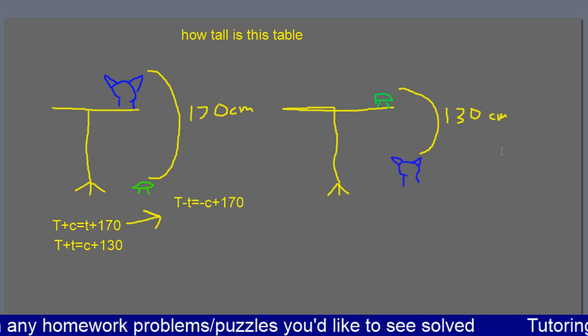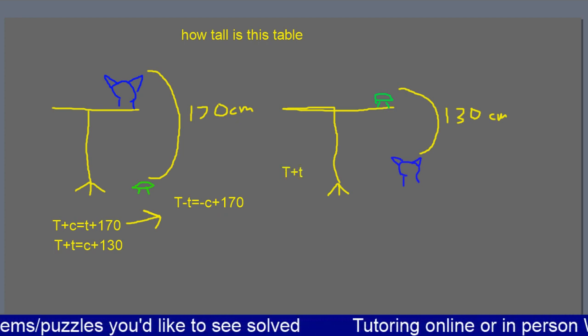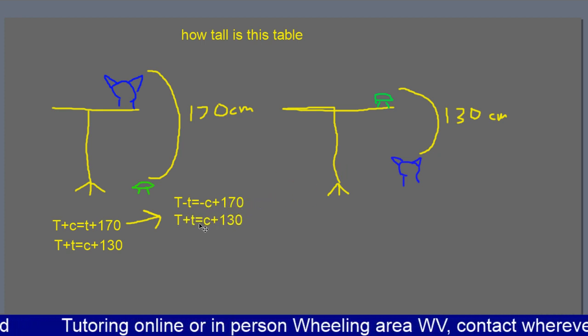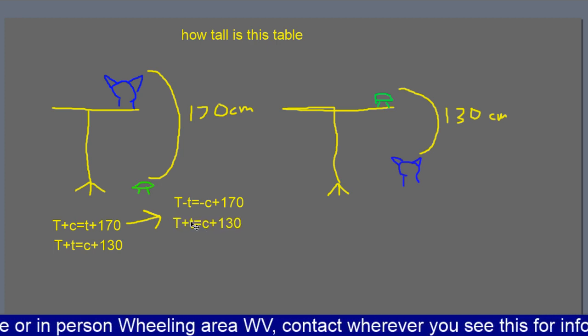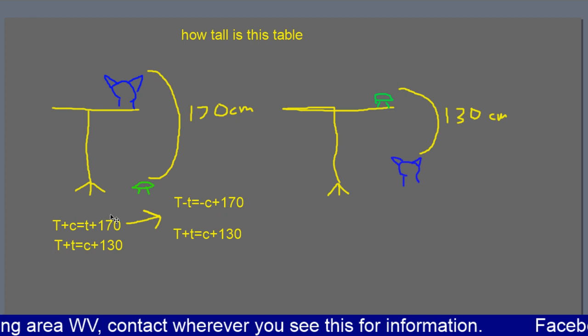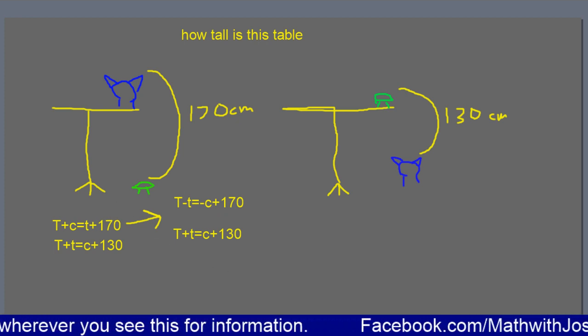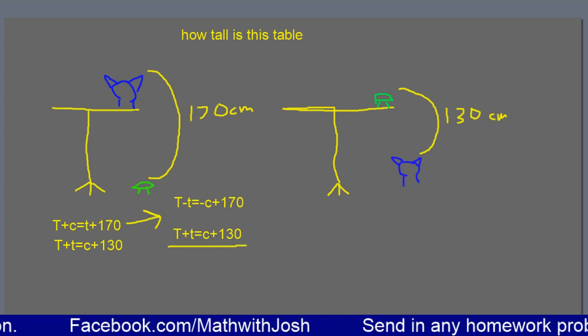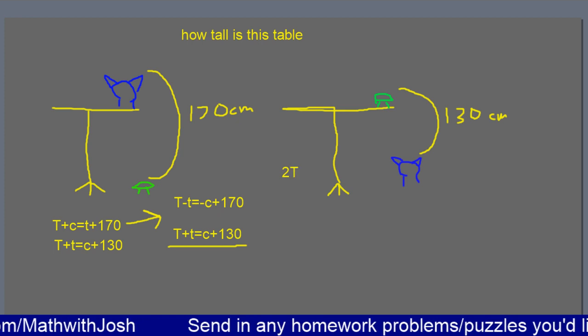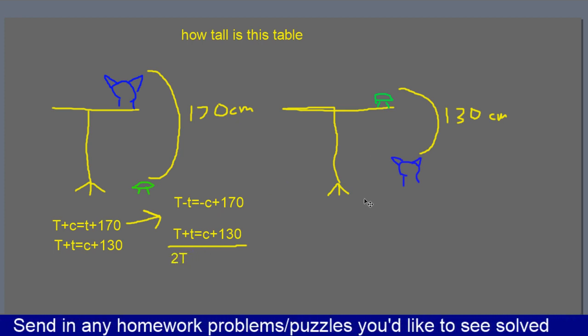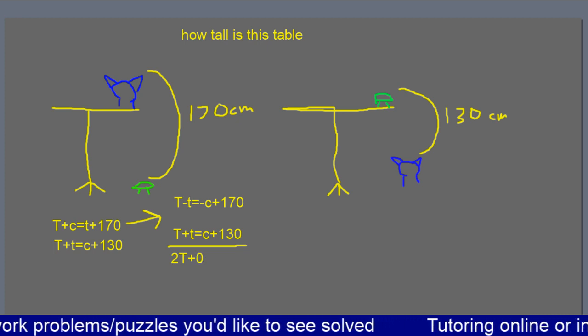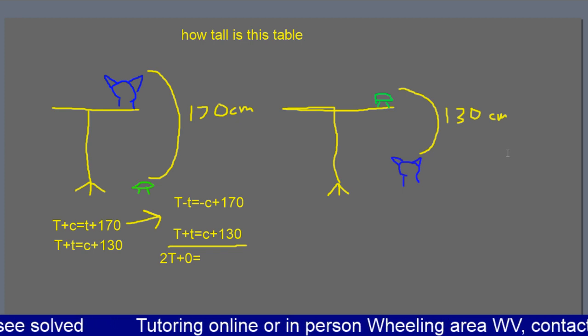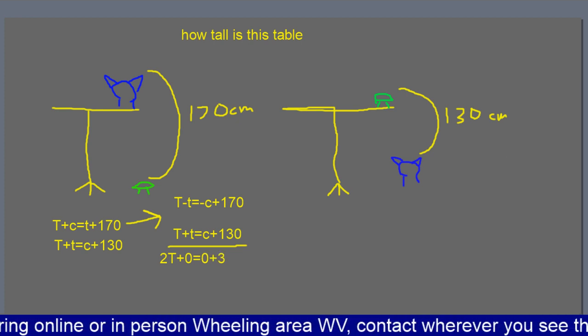So we're just going to copy the second equation over. Remember that capital T plus lowercase t equals C plus 130. The thing we're allowed to do is we move some things over to make the first equation line up in a way we wanted. I'm just going to add these two equations together, which is something you can do. And when I add them, what we'll end up with is two T, I'm just going to say plus zero, so you see what happened to the lowercase T, equals negative C plus C is zero plus 300.